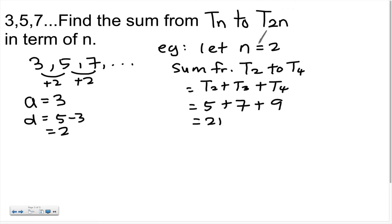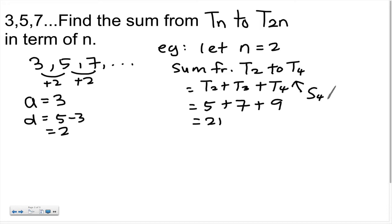Of course this is just an example, since at the end we need the answer in terms of n. However, from this example we can see a method: the sum from T₂ to T₄ equals the sum of the first 4 terms minus the sum of the first term. That is, S₄ minus S₁, which leaves T₂ + T₃ + T₄.